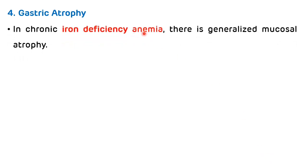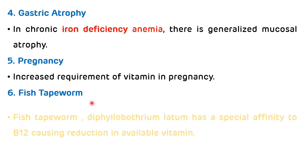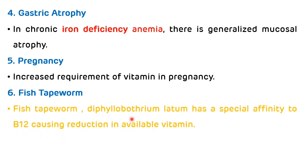Fourth cause is gastric atrophy, which results in defective absorption of vitamin B12; in chronic iron deficiency anemia there is generalized mucosal atrophy. Fifth cause is pregnancy, as requirements are increased. Another important cause is the fish tapeworm Diphyllobothrium latum, which has a special affinity for B12, causing a reduction in available vitamin.